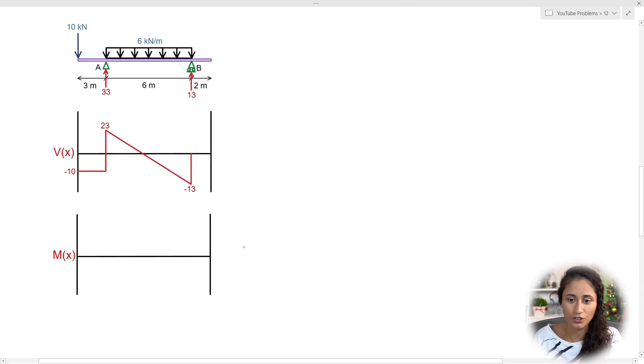So as we discussed earlier, to find the moment, what we're going to do is take the area under the shear diagram. So let's do that. We're going to start with this area here. So this is a rectangle. The area is just going to be the length times the width. So we're going to have M1 is equal to minus 10, which is the length, and then the width is just going to be this distance here, which is 3 meters. And this is going to give us minus 30.